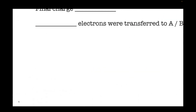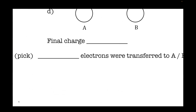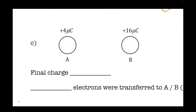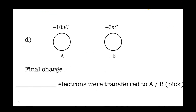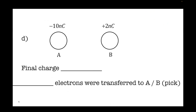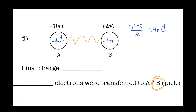Now what if our initial charge is not zero anymore? Right here, for example — looking at example D. I have a negative and a positive: electrons are going to try to get away from the negative onto the positive, so they're going to be transferring to sphere B. What's the final charge? Negative 10 plus 2 is negative 8, divided by 2 is negative 4 nanocoulombs. So both spheres end up at negative 4 nanocoulombs.